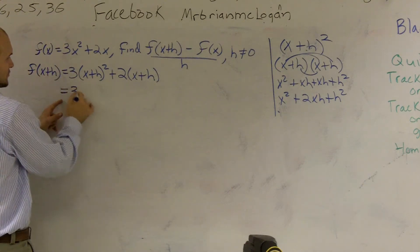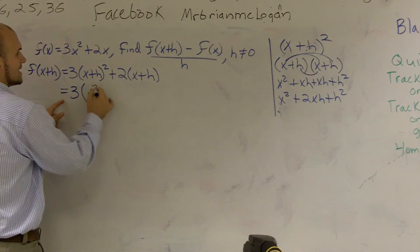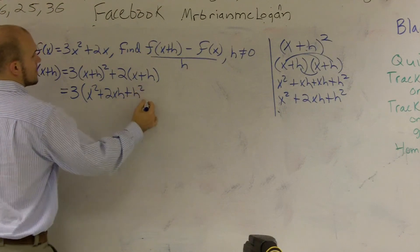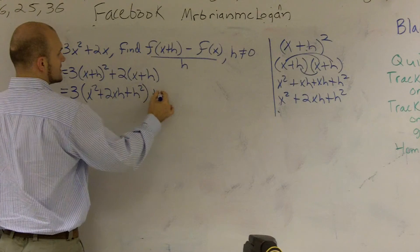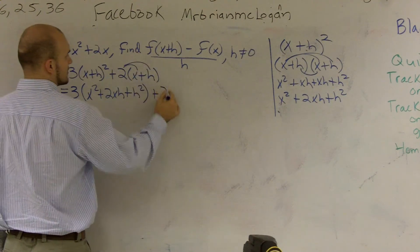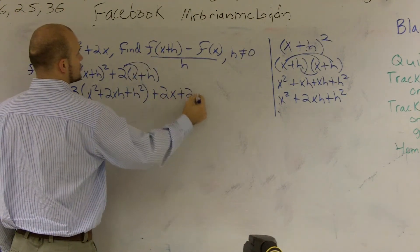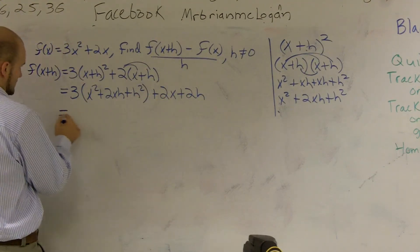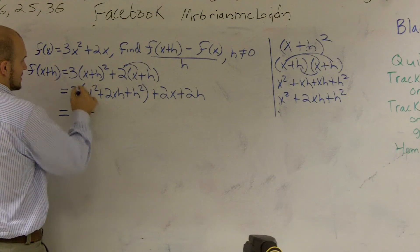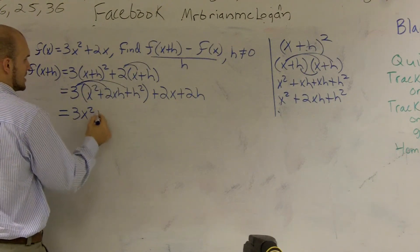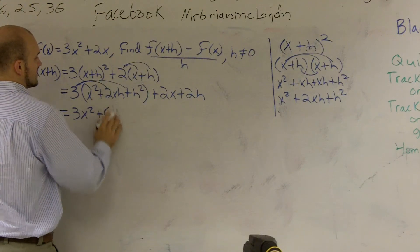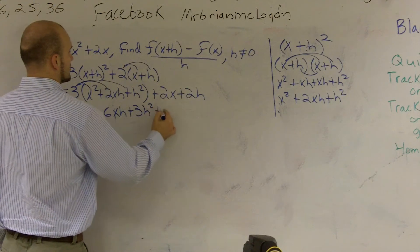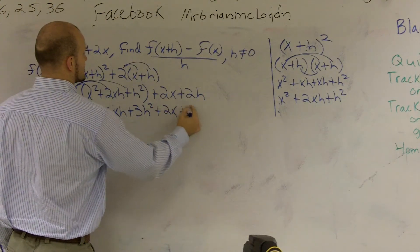So that's what that is. So it's $3(x^2 + 2xh + h^2)$ in parentheses, plus, now I can use the distributive property here, $2x + 2h$. We're not done yet though, we need to distribute all this. $3x^2$, I'm going to distribute this to everything, plus $6xh + 3h^2 + 2x + 2h$.